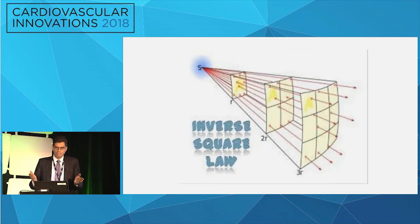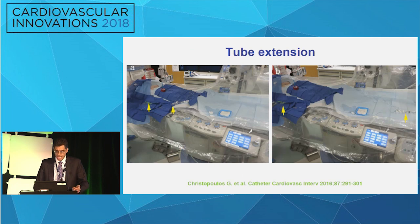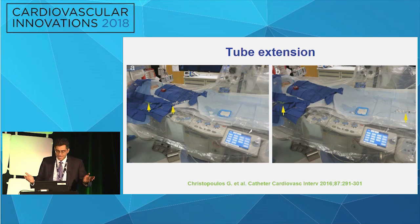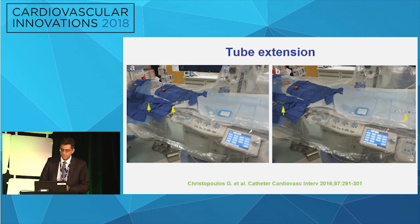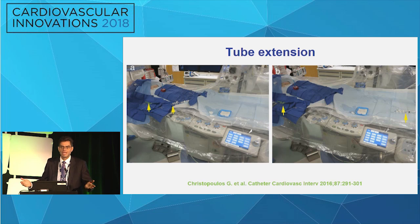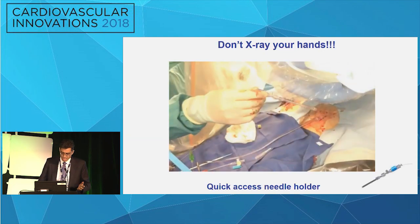Distance is a basic law — radiation is more intense the closer you get to the beam. So you step back. There's a 30-cent piece of equipment called a manifold extension that you can put on your manifold, your tech can go back three feet, and you reduce radiation by a significant factor. Don't put your hands in the beam. If you really want to obtain access under fluoro, get the quick access system — you can put it under fluoro, get your access, put the wire down, remove the system, and your hands are not fluoroscoped.